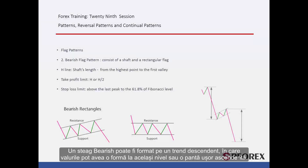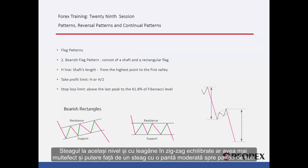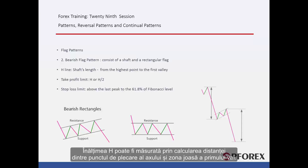A bearish flag can be formed on a downward trend, in which waves may have a level shape or a gentle upward slope. A flag with level and steady zigzag swings would have more effect and power rather than a flag with a moderate slope towards the top. Height can be measured by calculating the distance between the starting point of the shaft and the valley of the first wave.